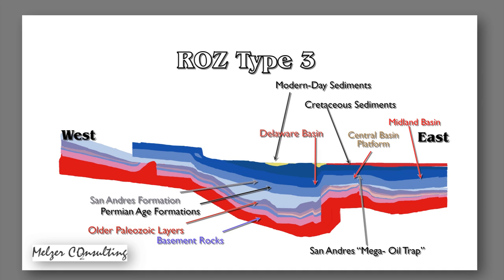What we're doing here is we're going to demonstrate the origin of the predominant type of residual oil zone in the Permian Basin. This is our source for the next generation of CO2 EOR production for oil.